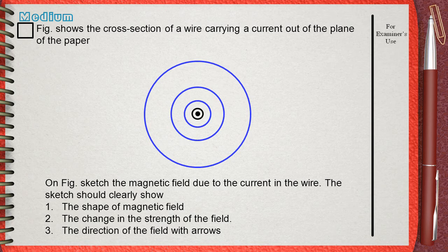You cannot draw them equally spaced. Because if you draw them equally spaced, this means that you are telling the examiner that the magnetic field is with equal strength. And this is not correct.